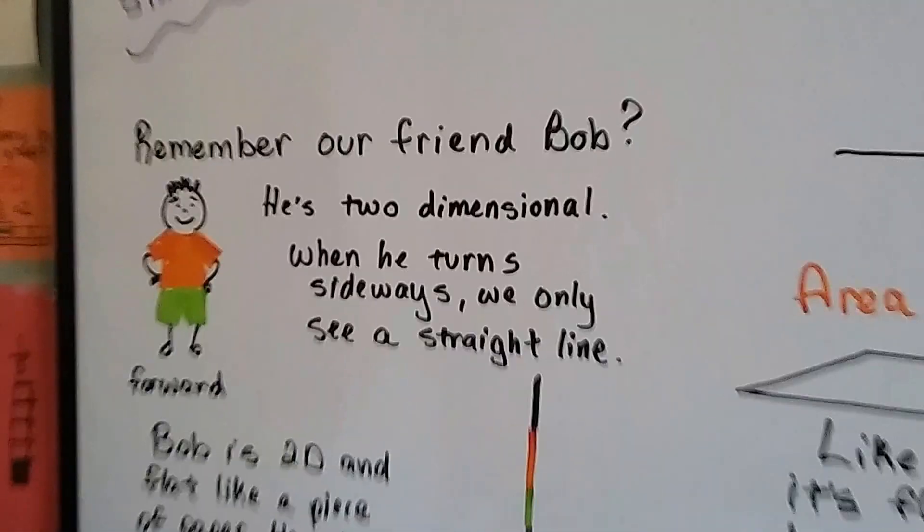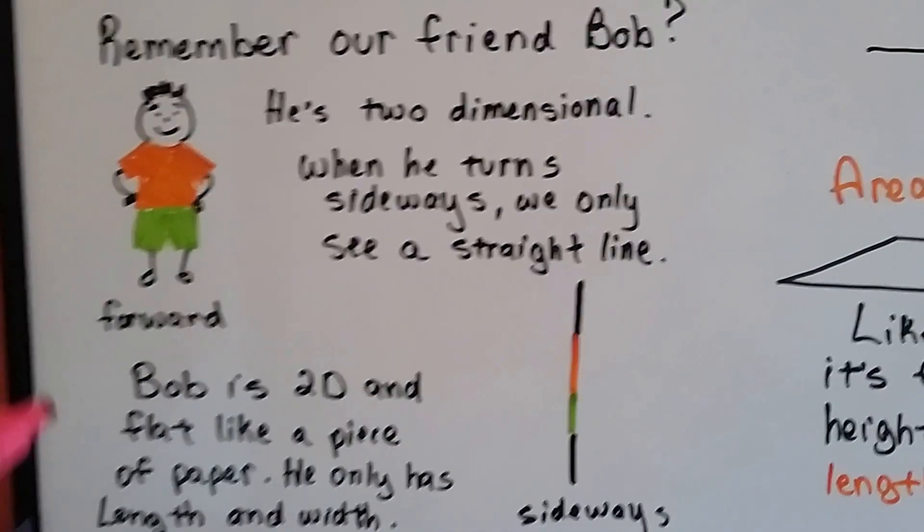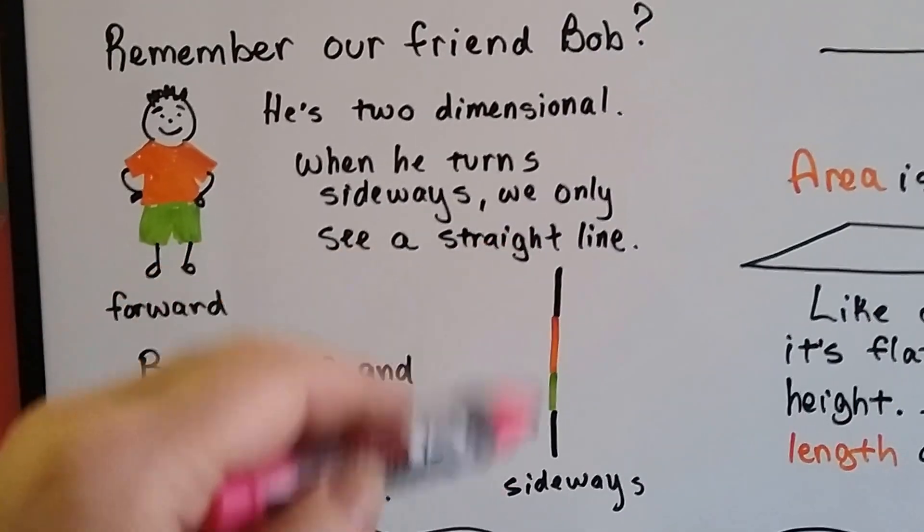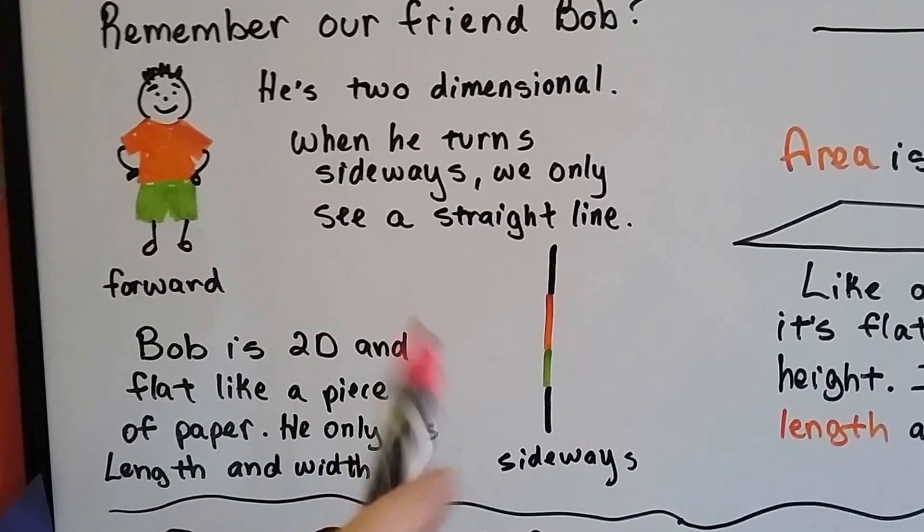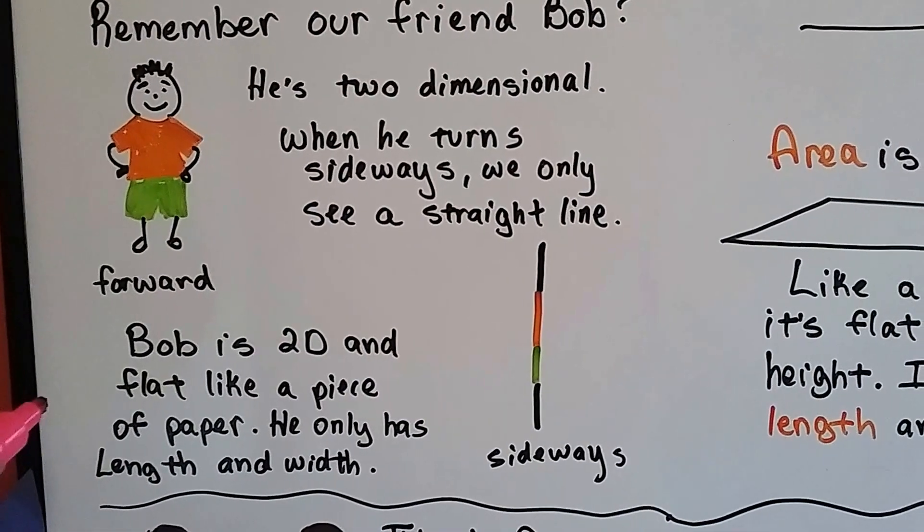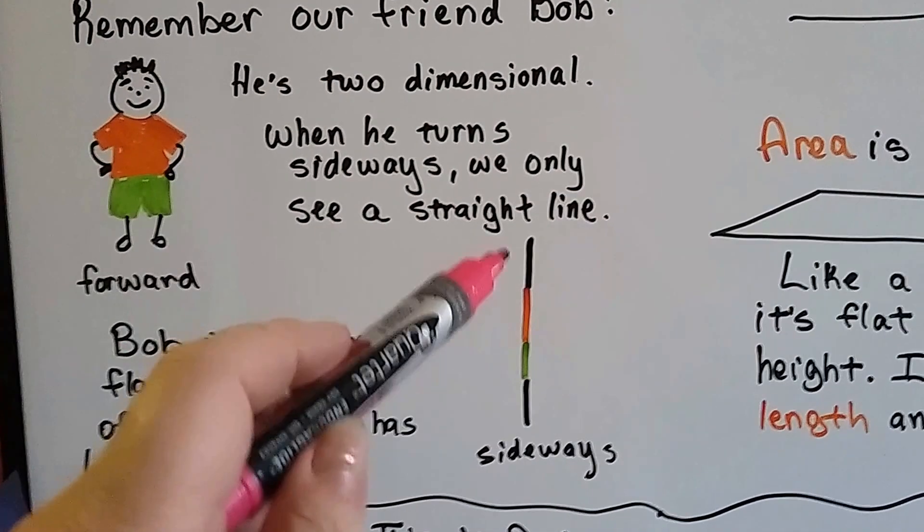I don't know if you remember from fifth grade, but if you remember our friend Bob, he's two-dimensional. He's 2D. When he turns sideways, we only see a straight line. He has no thickness to him at all. He's 2D and flat like a piece of paper. He only has the length and width.